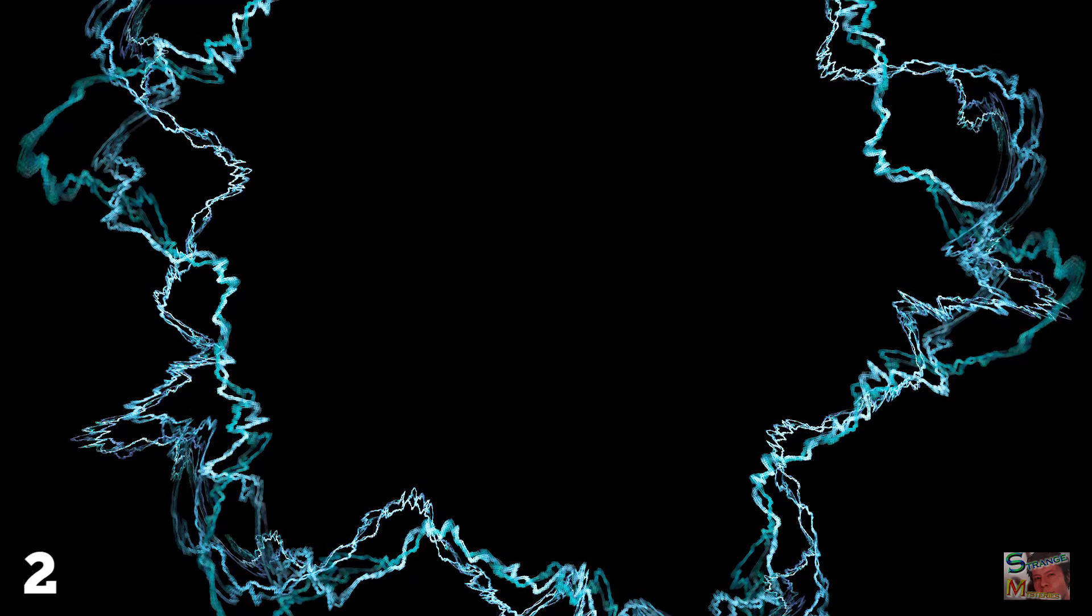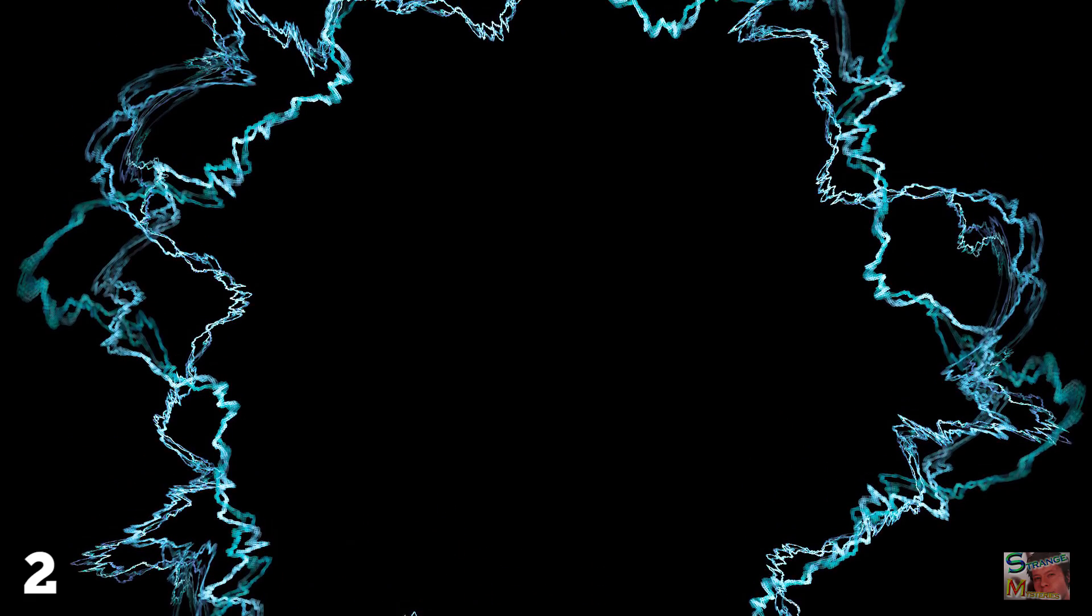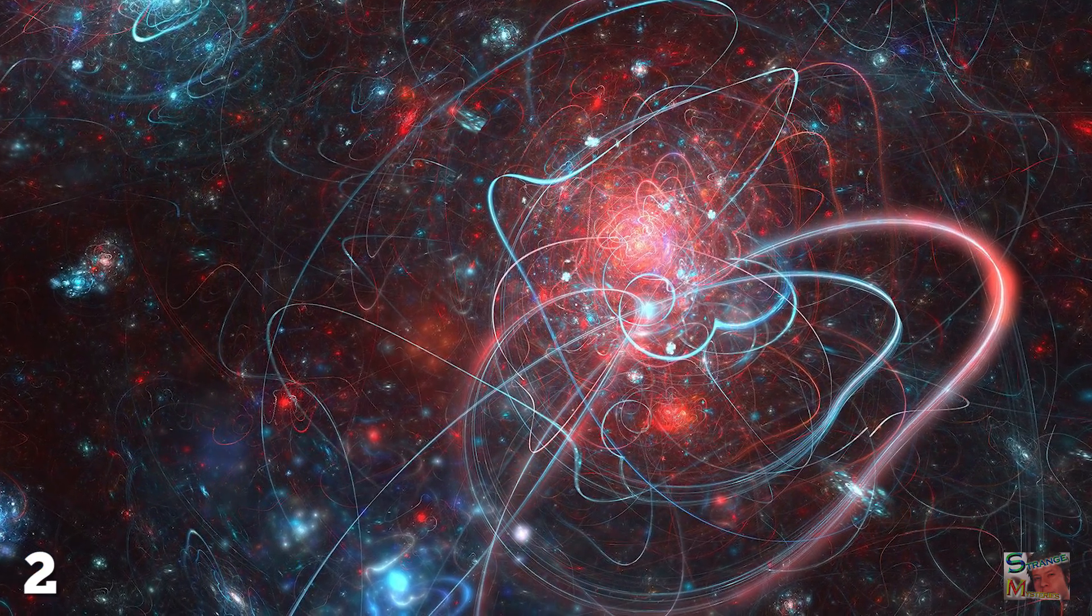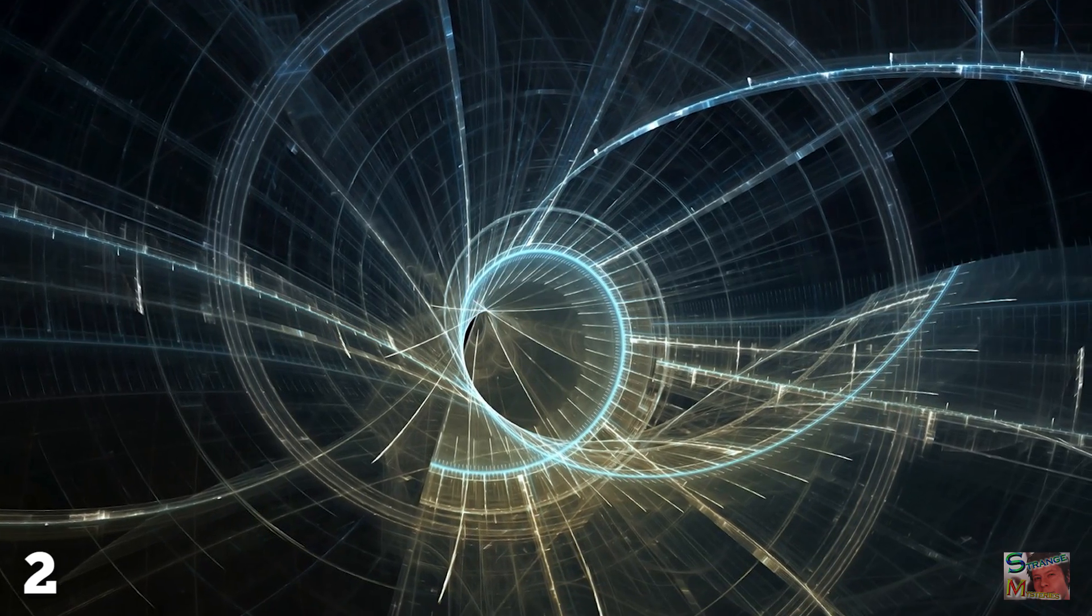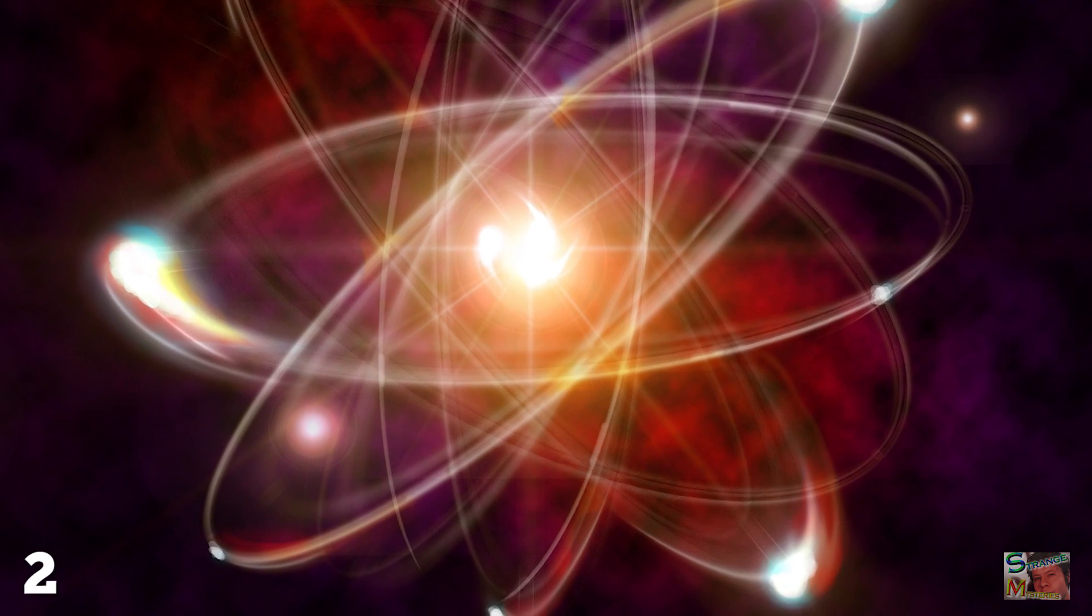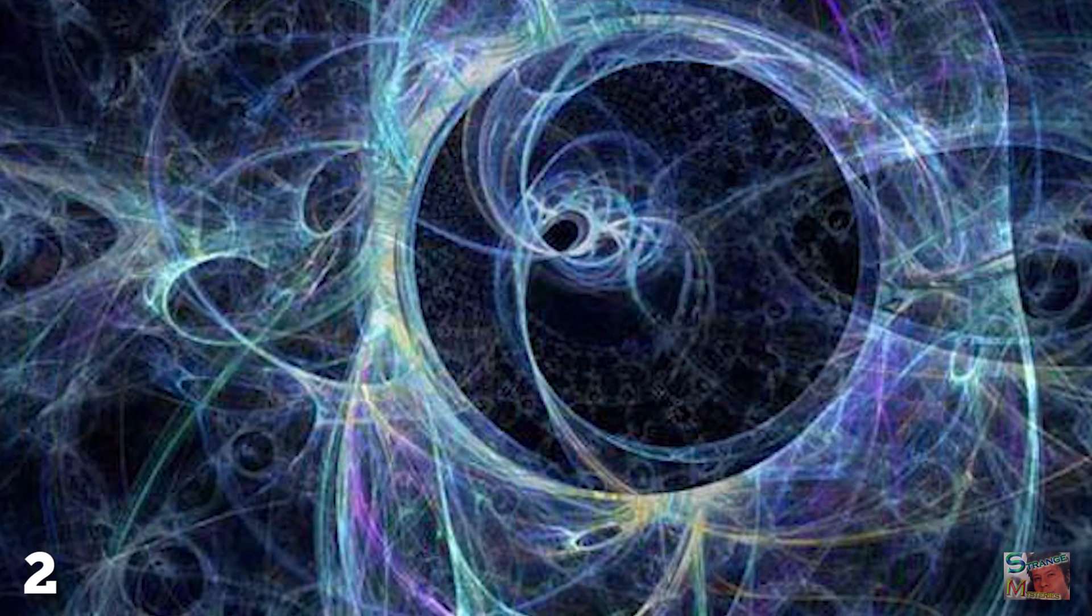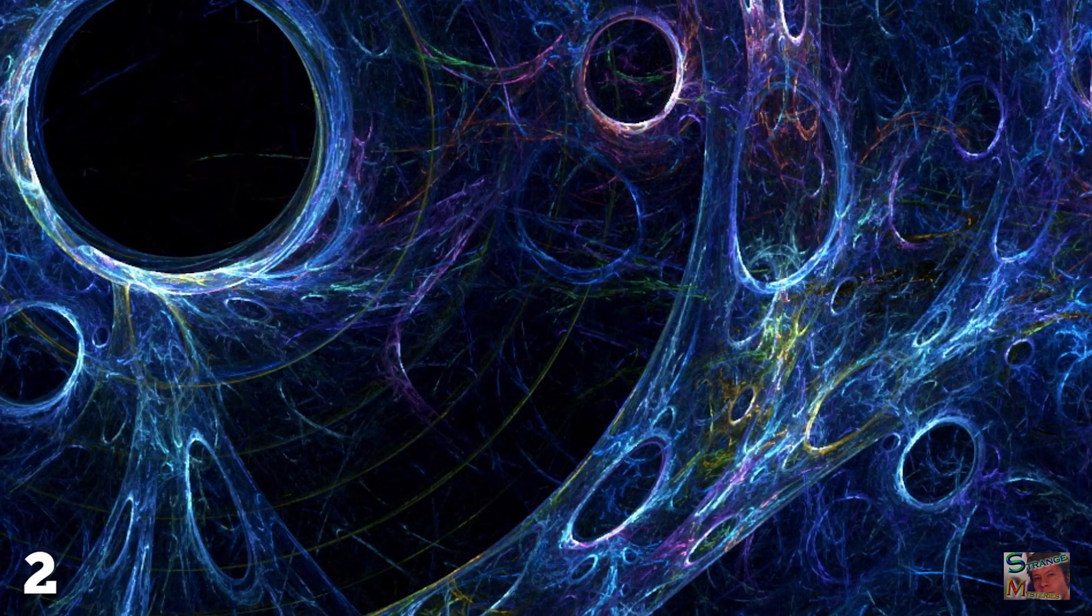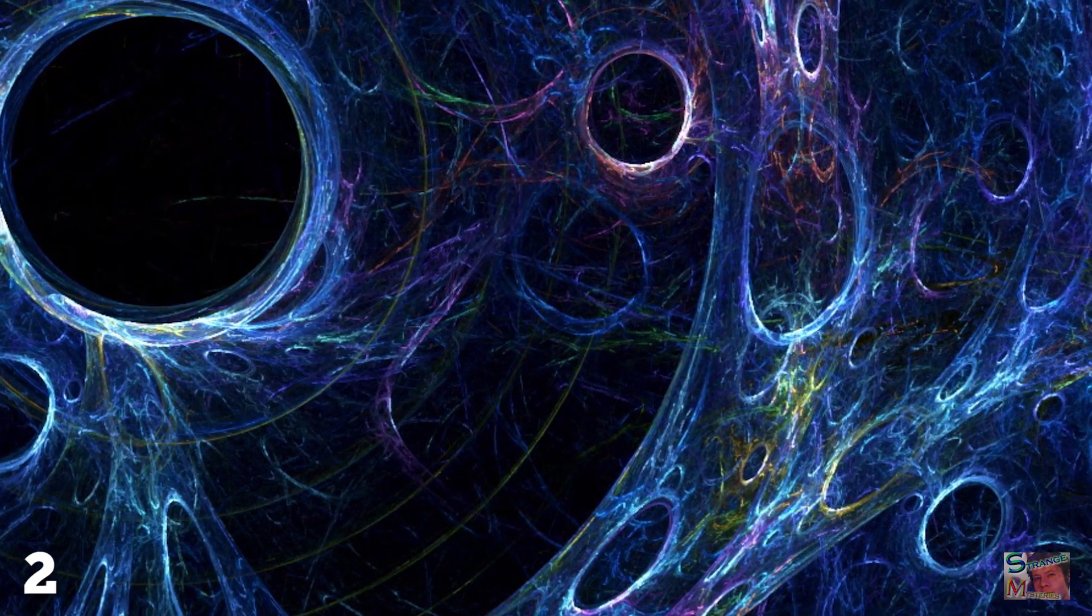String theory tells us that all matter and all forces have strings which dangle down to a level below the quantum level. These strings eventually form quantum particles, electrons, atoms, and cells, with their destiny determined by vibrations on the strings, and this action takes place across 11 different dimensions.